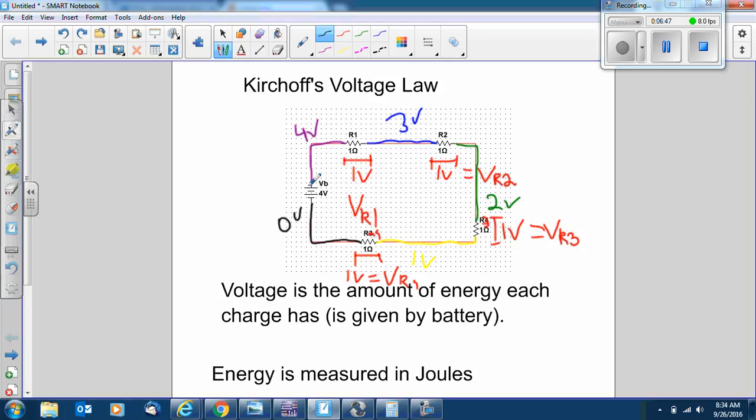So let's get to the actual Kirchhoff's voltage law. What you really saw right now is the application of Kirchhoff's voltage law. And what it says is that the voltage that the battery gives the charges has to be spent around the circuit. In other words, all the voltage drops - V of R1, V of R2, V of R3, V of R4 - they all have to add up to the voltage of the battery.